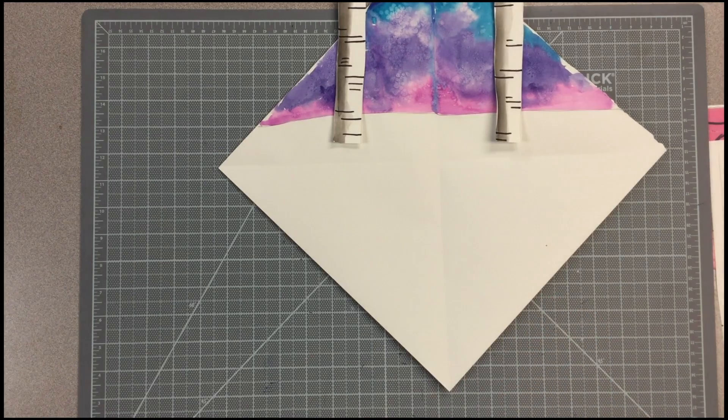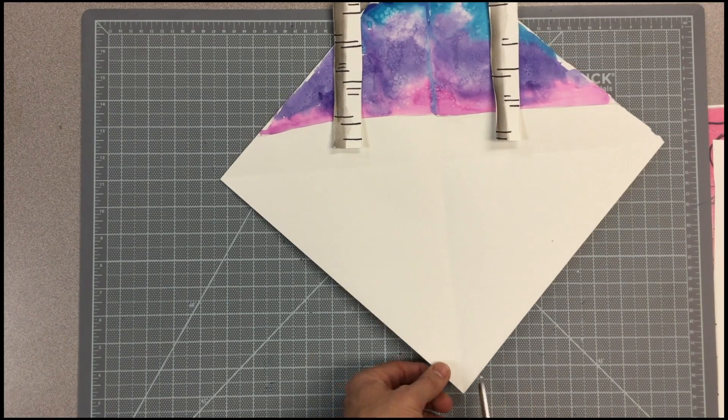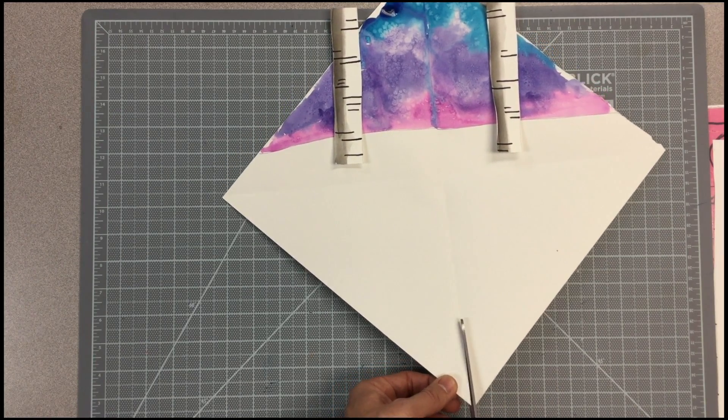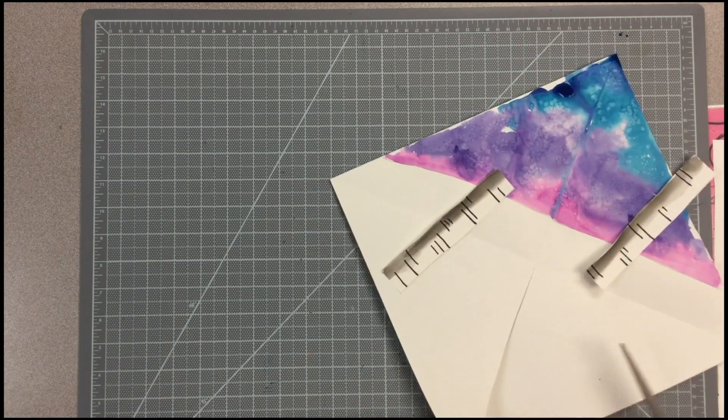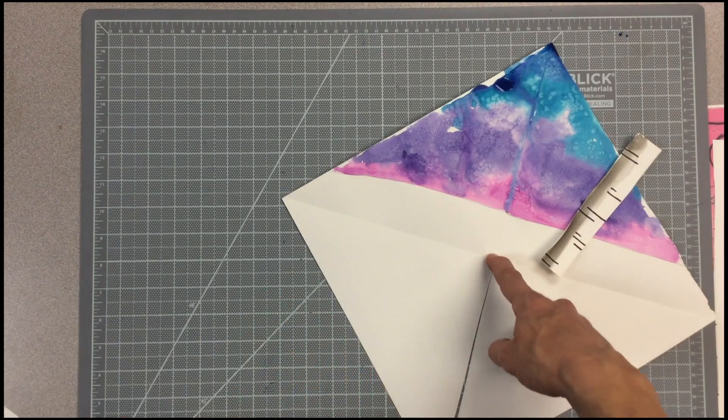Here comes the tricky part, making it three dimensional. I've got to cut this diagonal line up to the fold in the center of my paper.